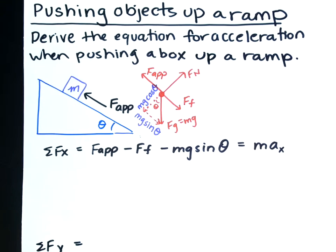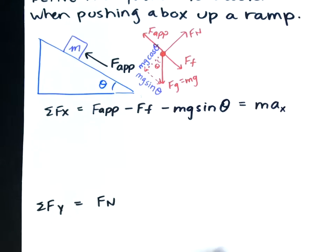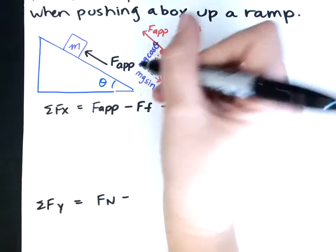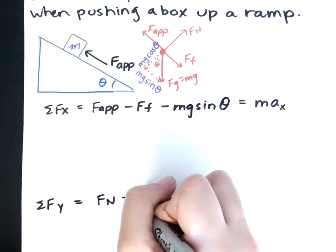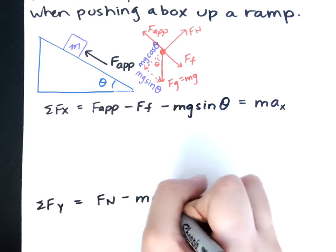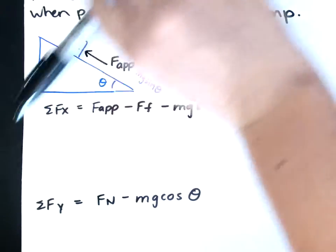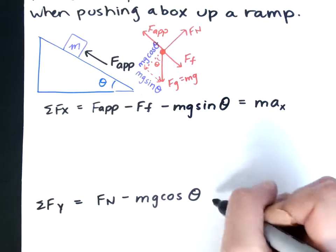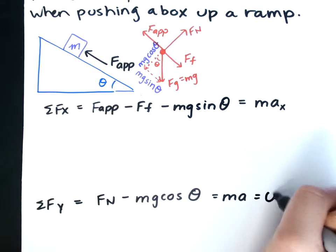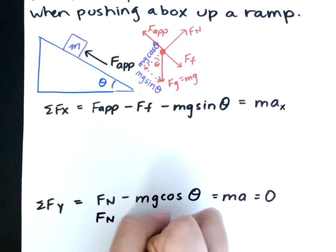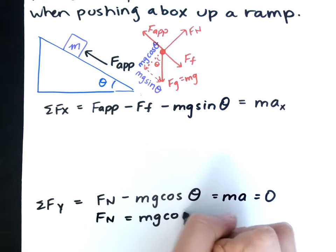So our y-equation is, well, f normal is up. And up is still positive. So f normal is positive. And our downward force is mg cos theta. So minus mg cos theta. And is the box moving up and down relative to the incline? No. No, so ma is equal to zero. So we can say f normal is equal to mg cos theta.